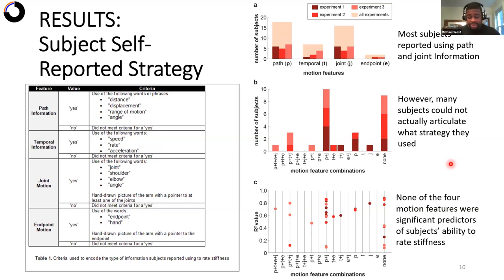And the most important part of the result is that none of the four motion features that subjects used actually were significant predictors of subjects' ability to rate stiffness. So if you look at the motion features that subjects reported using, and the R squared value, or the coefficient of determination, which we've decided is a measure of how well subjects are able to do the task, we can see this wide range of performance.